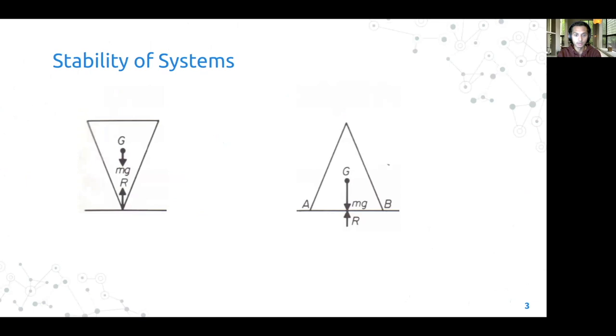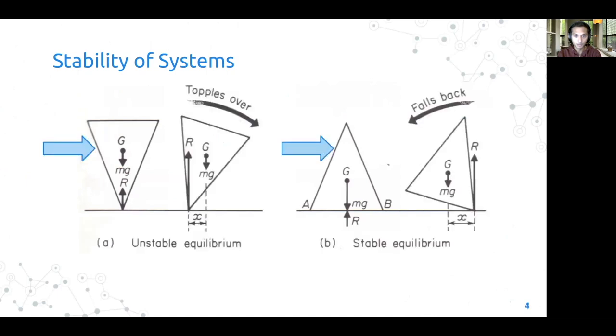In physics, a system is said to be in a state of equilibrium if the net force acting on the system is zero. Both these systems are in a state of equilibrium here. But if there's a force that acts on these systems, the first system topples over, but the second does not.